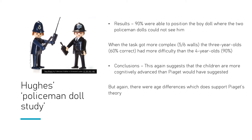On the other side of the coin, there is also some support for Piaget's theory here. The age differences found — younger children performing more poorly and older children performing better — actually supports Piaget's idea that cognitive thinking develops as we get older, our understanding becomes more complex, and our schemas are built up. It did suggest that younger children are more ego-centred and older children less so, providing partial support for Piaget alongside the criticism.